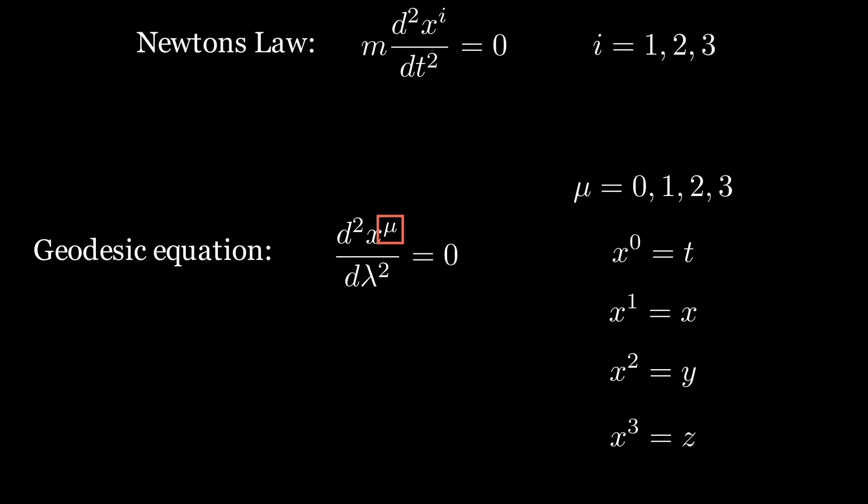But we can also rewrite Newton's law in this format. If we put an index i on the x, then we have three separate equations for the force, one for each direction. Of course, we can't have i equals zero. Newton's law only applies to the spatial directions. Now we get to the lambda term.